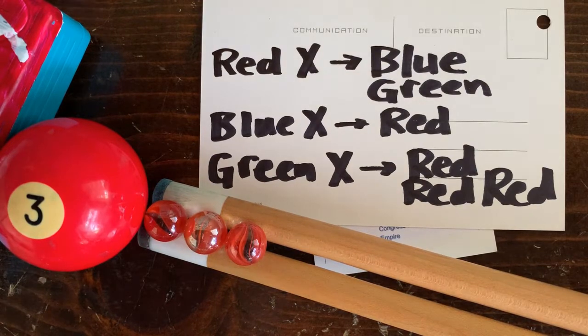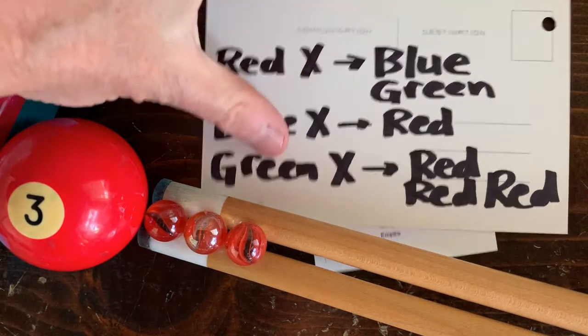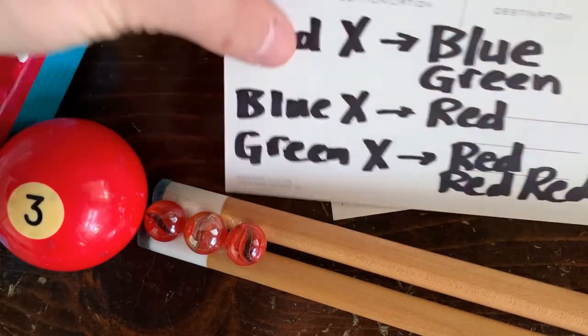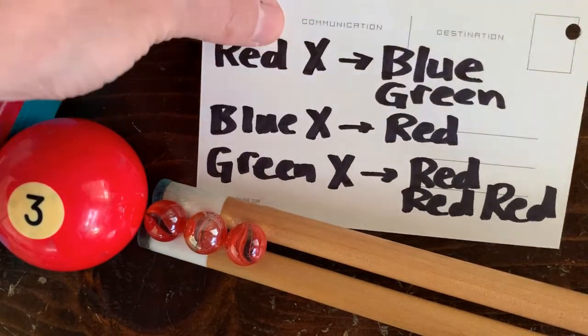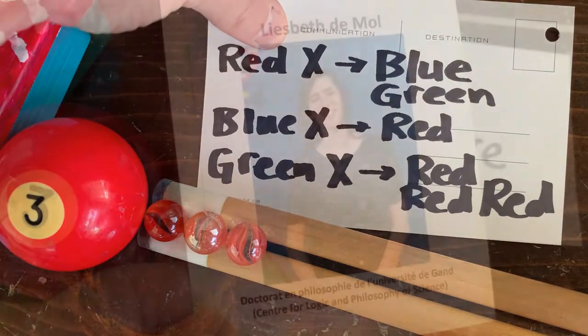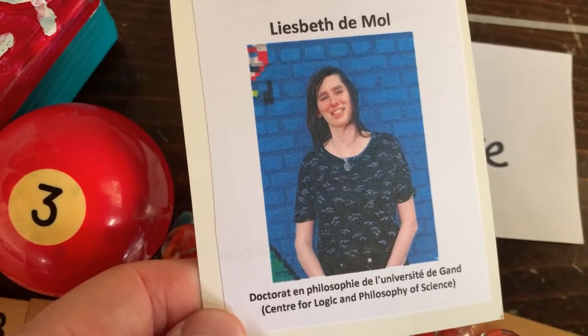Next, you hand the program some input, for example 3 reds. Then the program is going to chug away generating outputs. This program amazingly computes the 3n plus 1 sequence for any start number. Lisbeth DeMolle came up with it in 2007.